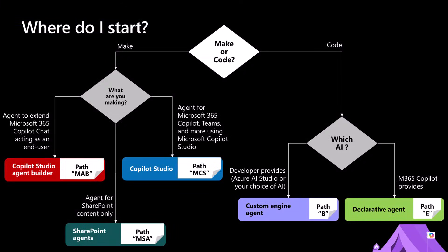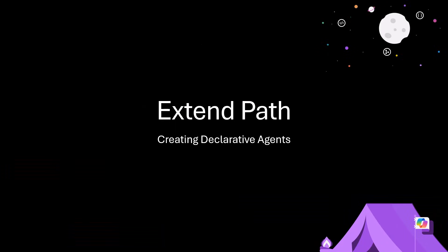Now let's switch to the professional developer side. If you want to extend Microsoft 365 Copilot chat leveraging the same engine and foundational model used by Microsoft 365 Copilot but providing an agent with a specific context and scope of content for a target scenario, that's the case of a declarative agent and you should go for the Extend path.